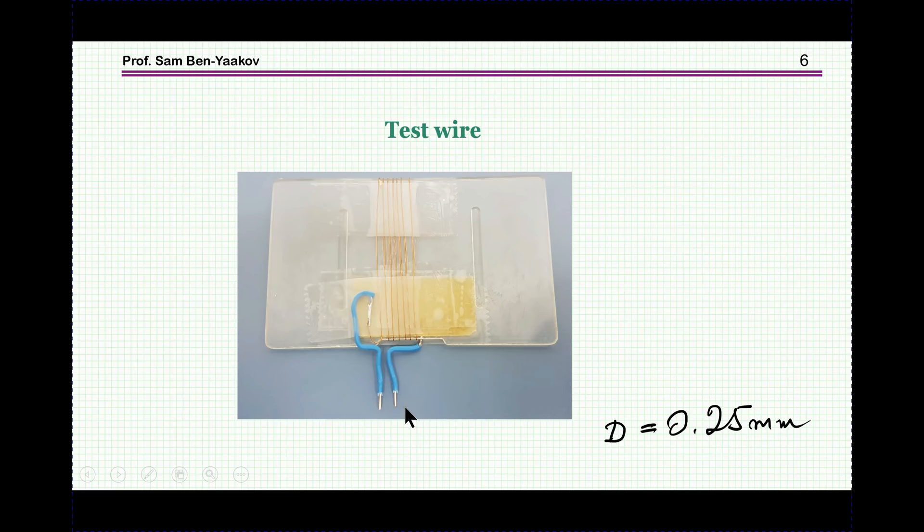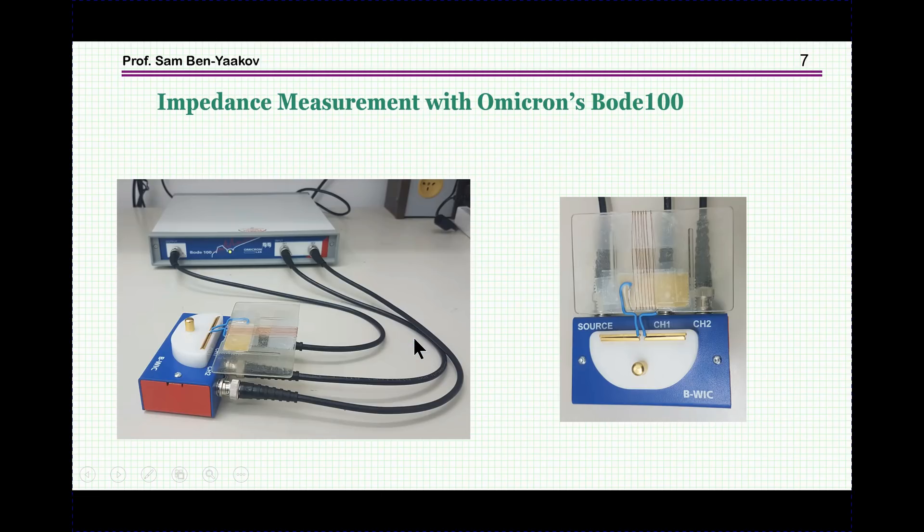Now, we have tested this by taking a wire, which is a 0.25 mm diameter, and wound it on a piece of plastic here, and we are careful to do two things. Number one is to minimize inductance by having this very thin, relatively thin piece of plastic here, and then winding the wires at the distance, one from the other, in order to reduce the capacitance. So this, then, was measured by the network analyzer by Omicron, the Bode 100.